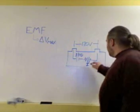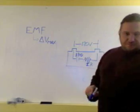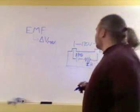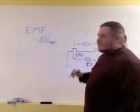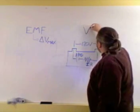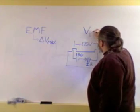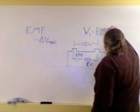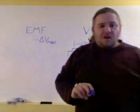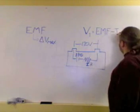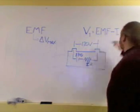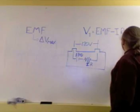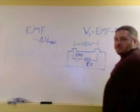Times the internal resistance. So what we can say is that this voltage across the terminals is equal to the EMF minus the current in the circuit times the internal resistance.